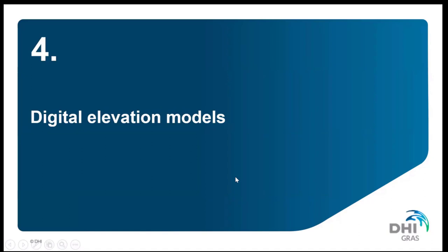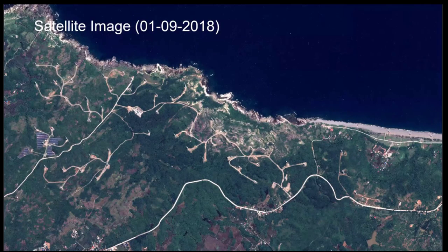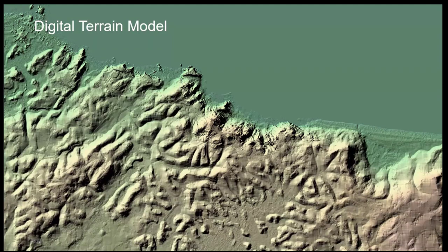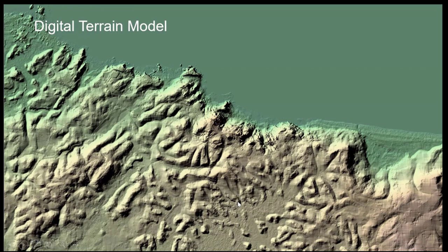There is also a different technique for getting information about forest height using commercially available satellite digital elevation models, where you have a surface model and a terrain model and can subtract those to get information about forest height. Those are commercially available and we have access to them as well. They take a bit longer to produce than the method I've shown, but they also give good results on forest height and can of course be used as input where you need digital terrain models for your wind resource estimation.